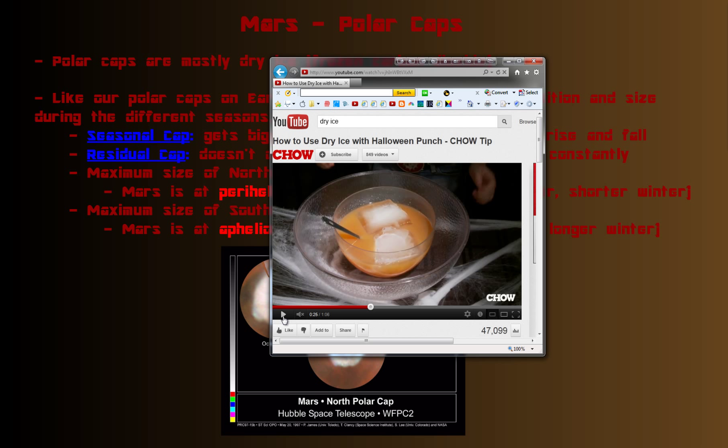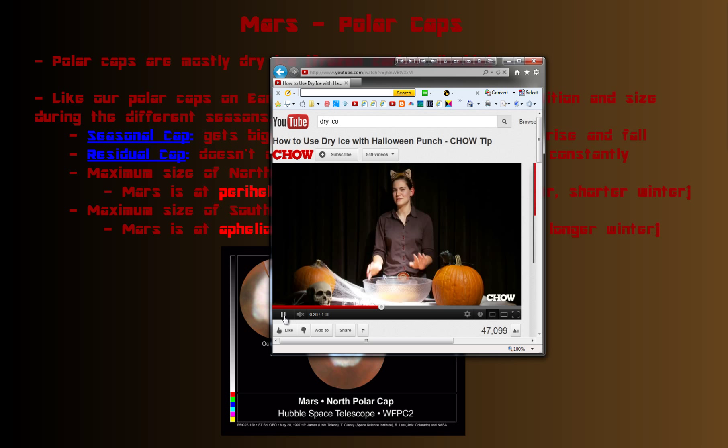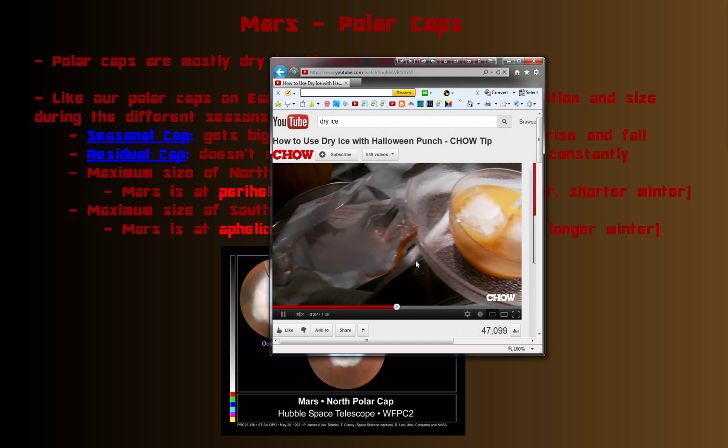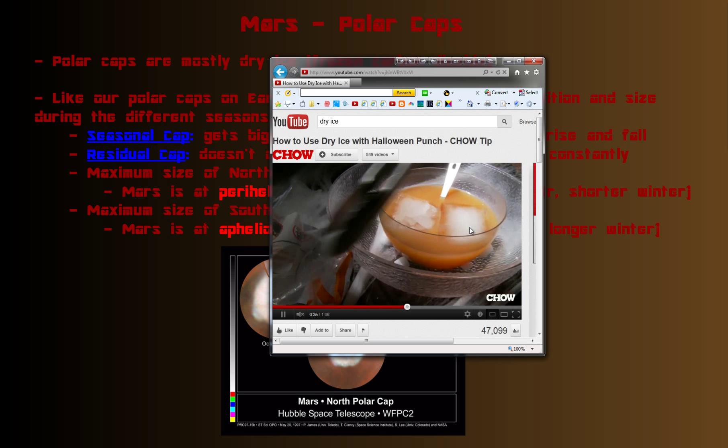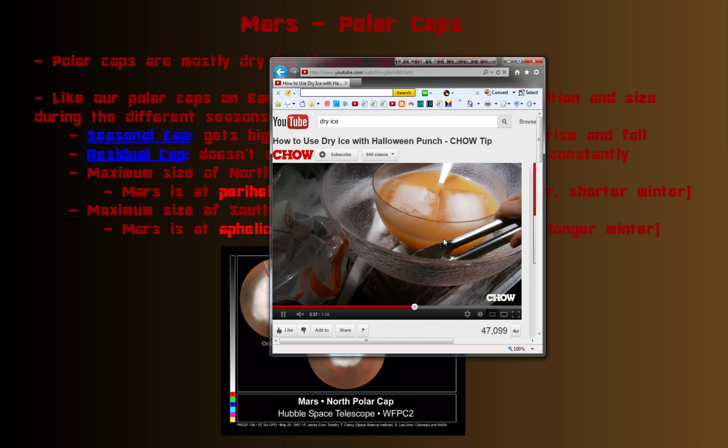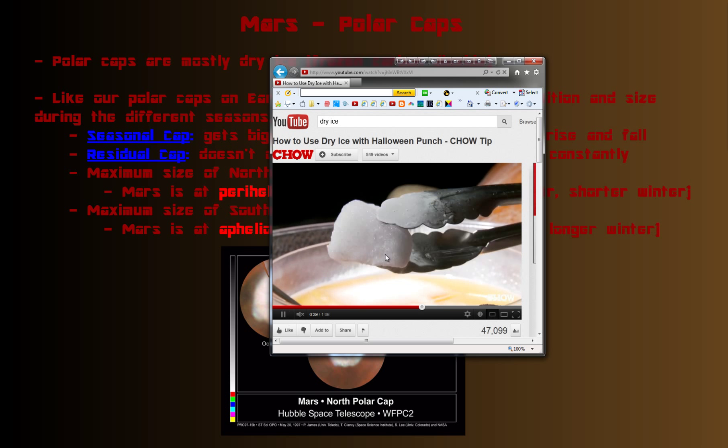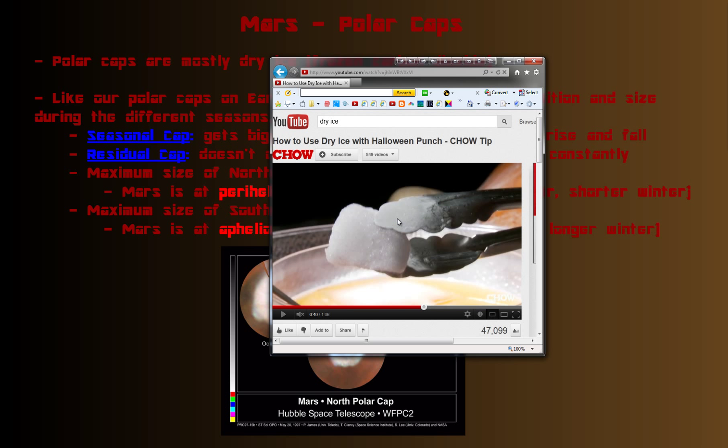Then she's going to put in dry ice, which looks a little different than water ice. As you'll see, here's some dry ice. It's really cold. You can see how it's building up frost on the tongs, making them really cold. So this is dry ice. This is actually CO2, the stuff you breathe out when you respirate.